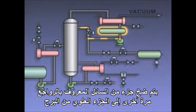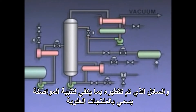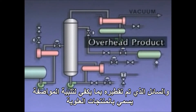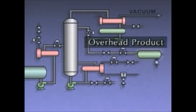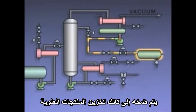Part of the liquid, known as reflux, is pumped back to the top of the column. The liquid that's been distilled enough to meet specifications is called overhead product. It's pumped to an overhead product storage tank.